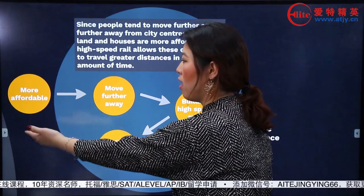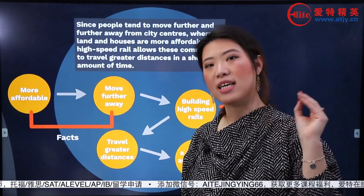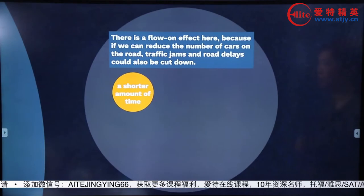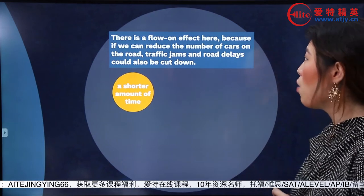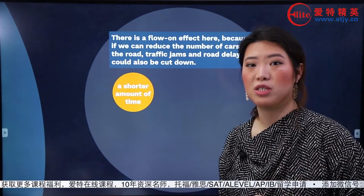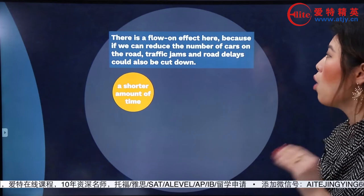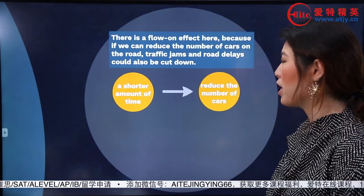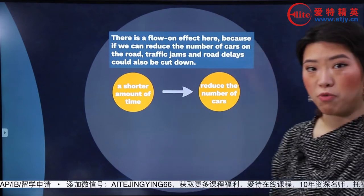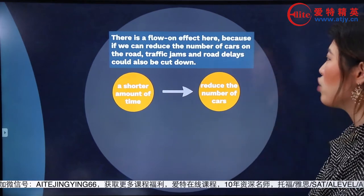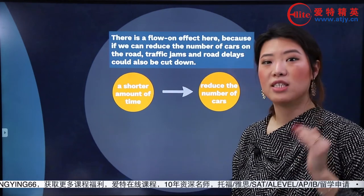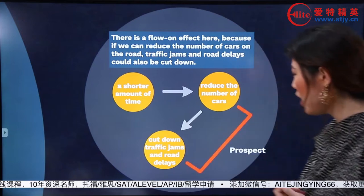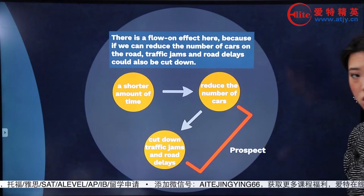這個段落還有一句話：There is a flow-on effect here, because if we can reduce the number of cars on the road——換句話說就是當大家都坐高鐵去上班了之後，必然就會有一個prospect，也就是reduce the number of cars on the road，開車的人就少了，大家都去坐公共交通了。Traffic jams and road delays could also be cut down. 這又是進一步地推了一個結果，叫做cut down traffic jams and road delay，這兩個點就是往後推的prospect。